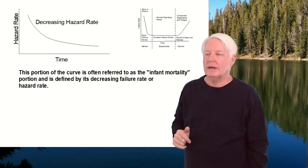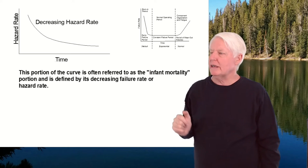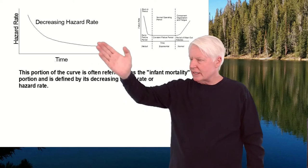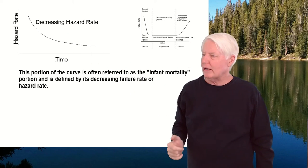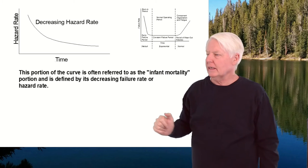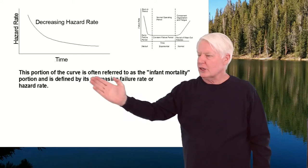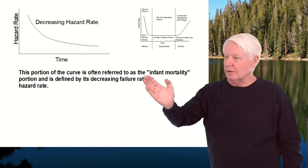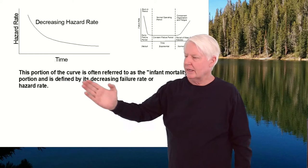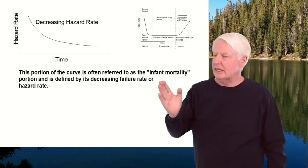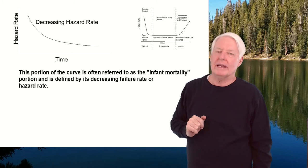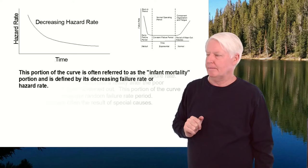Let me cover each section briefly. This first section is the decreasing hazard rate over time — in other words, the burn-in period. This portion of the curve is often referred to as the infant mortality portion and is defined by its decreasing failure rate or hazard rate over time.